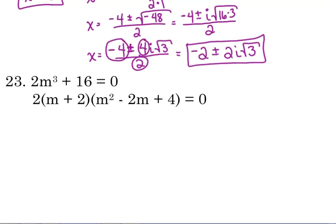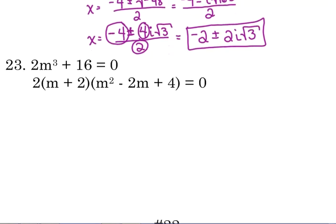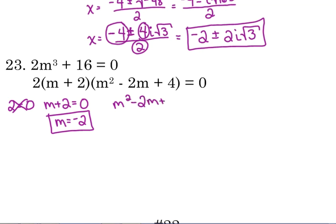Last one before I turn y'all loose to just do a bunch of things. 23. 2m cubed plus 16 is equal to 0. So we've got it factored. We've got 2 cannot equal 0. So we'll mark it out. m plus 2 is equal to 0. So m equals negative 2. m squared minus 2m plus 4 is equal to 0. Quadratic formula time. b is negative 2. So negative b is positive 2. Plus or minus the square root of b squared minus 4 times a times c all over 2 times a.